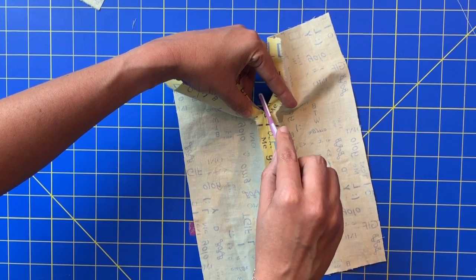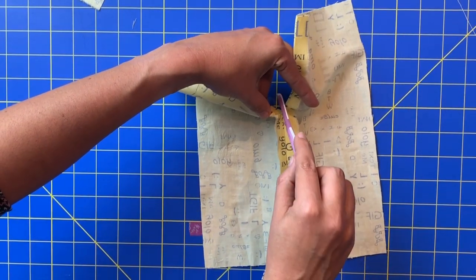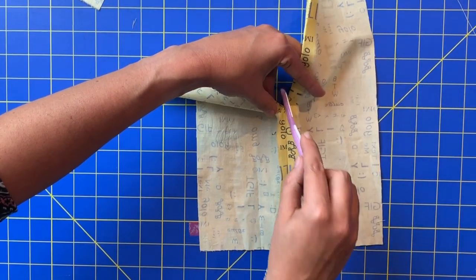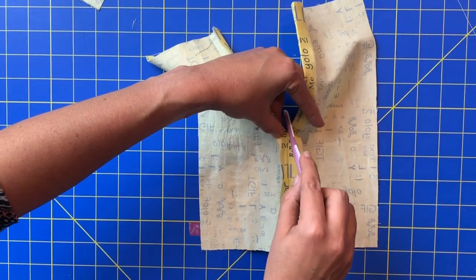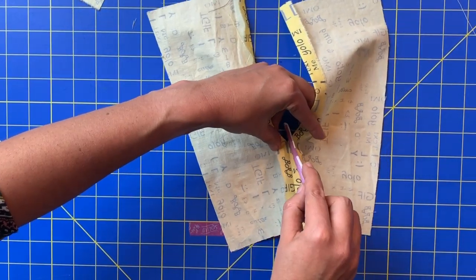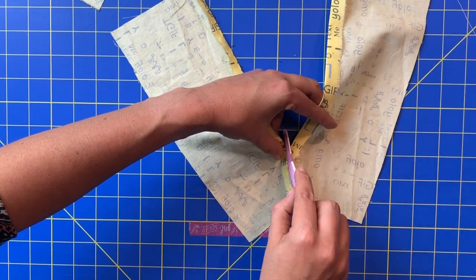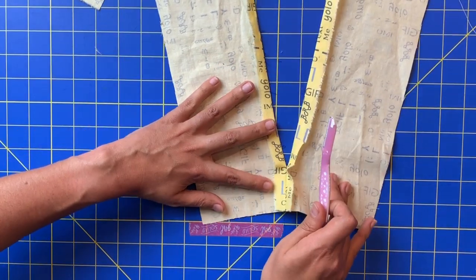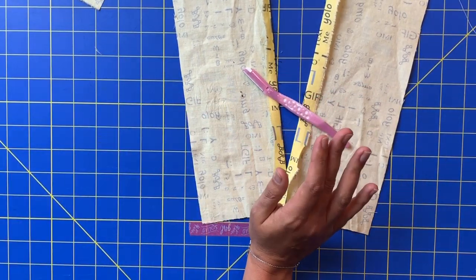As the fabric separates and the threads are exposed that's when the seam remover comes into place and you can easily remove this. Cool right? I love love love the seam remover.